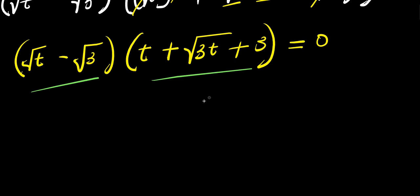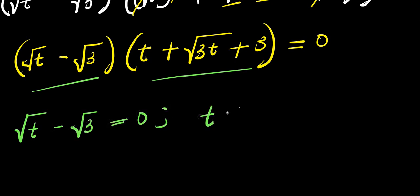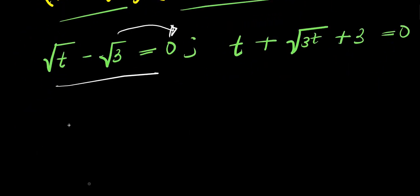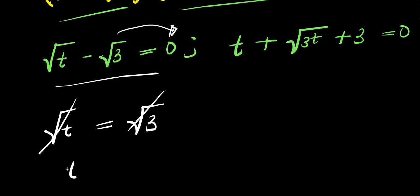We equate each factor to 0. From the first factor, square root of t minus square root of 3 equals 0. Moving square root of 3 over, we get square root of t equals square root of 3, so t equals 3. This is our t₁.